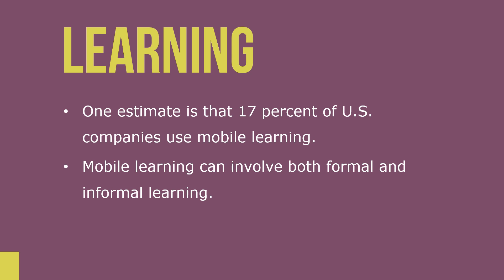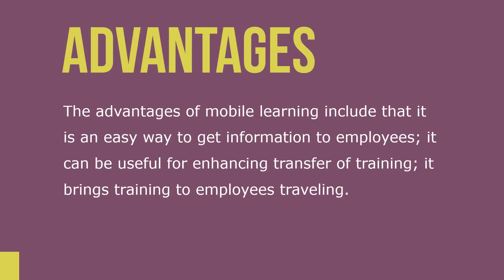Mobile learning can involve both formal and informal learning. Formal learning might include e-learning courses, podcasts, or videos on mobile devices. Informal learning includes engaging in communication and messaging with other employees or experts via Twitter, blogs, or Facebook. The advantages of mobile learning include that it is an easy way to get information to employees, it can be useful for enhancing transfer of training, and it brings training to employees who are traveling.